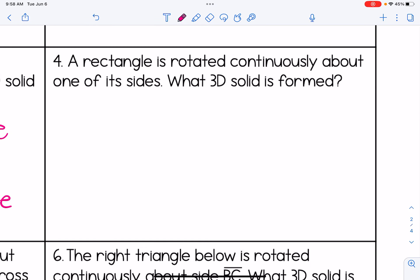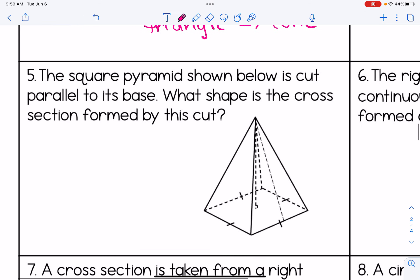Number four, a rectangle is rotated continuously about one of its sides. What 3D solid is formed? That's a cylinder. That's like our revolving door example from the first page. Number five, the square pyramid shown below is cut parallel to its base. What shape is the cross section formed by this cut? Well, remember that when you have a cross section parallel to the base, it is going to be the same shape as the base. The base is a square. So that's my answer here.